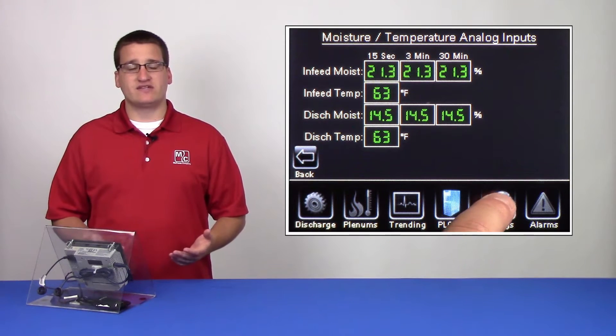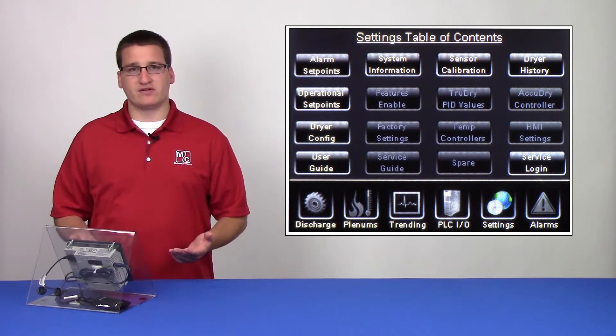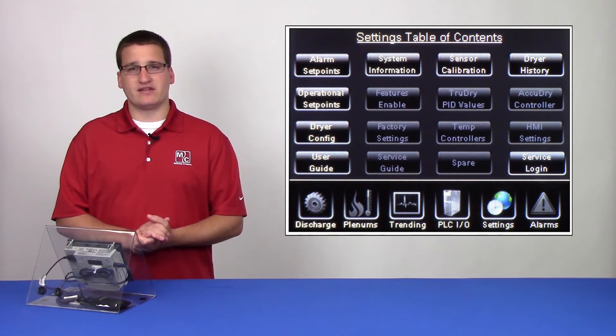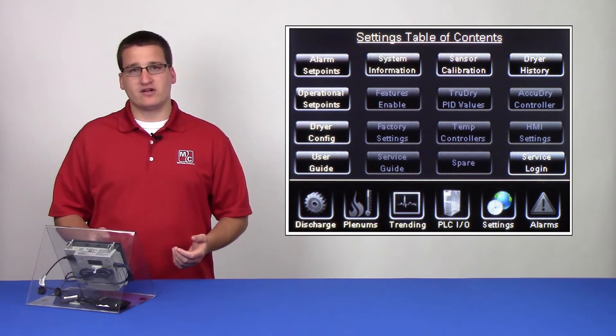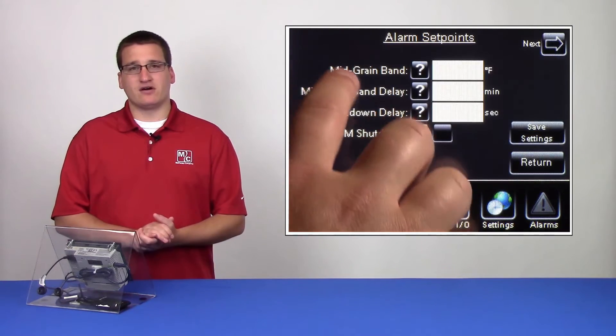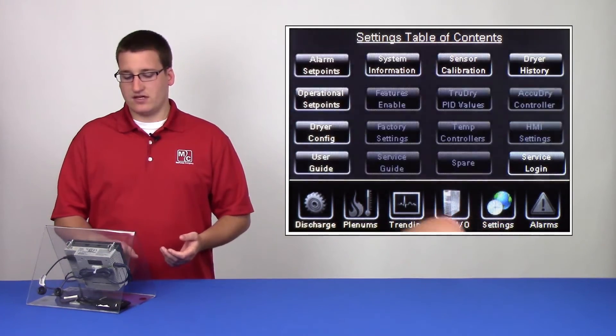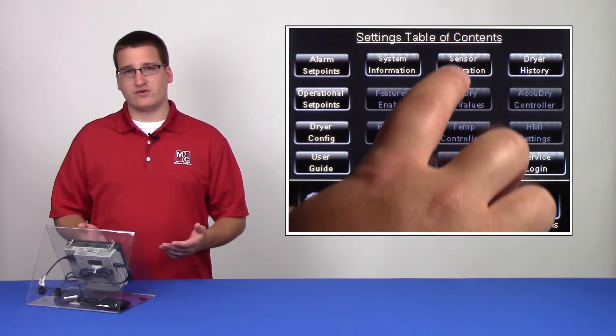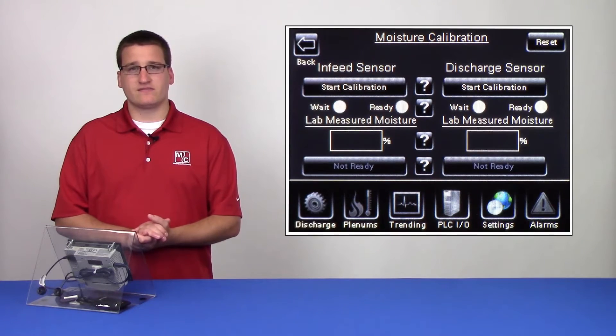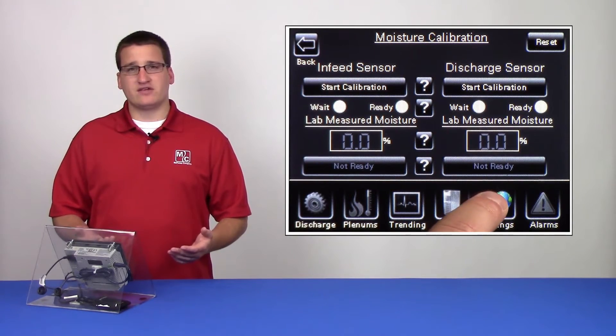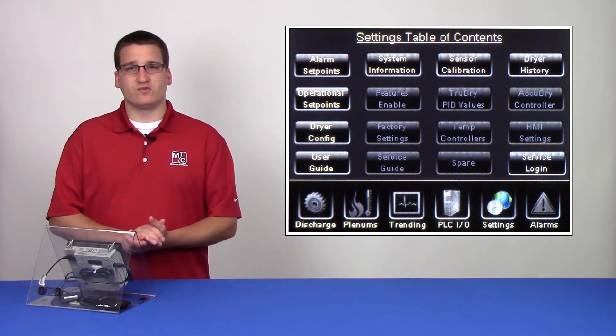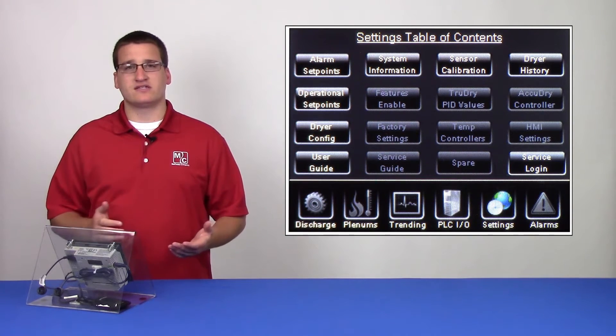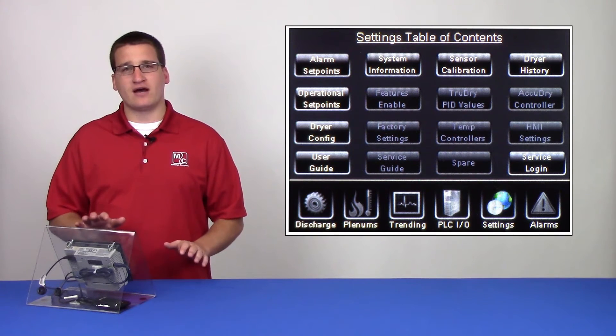Next we have the settings chapter. This is a very large chapter that has several sub-chapters underneath it. From here, we can manage our alarm set points, our operational set points, and even do a sensor calibration. We recommend that the user takes time to become familiar with the settings menu as well as the sub-chapters underneath before operating the dryer.